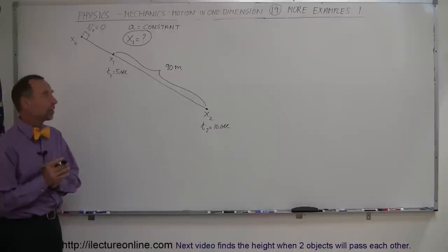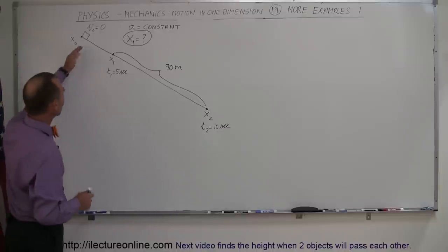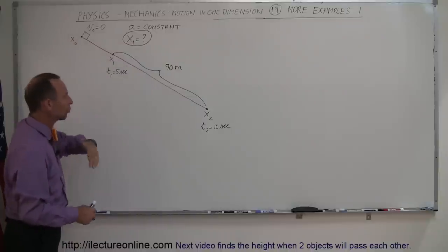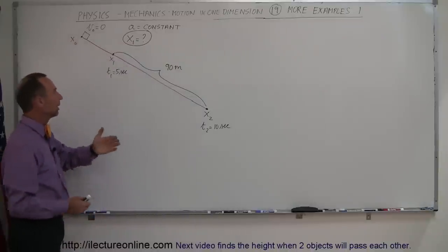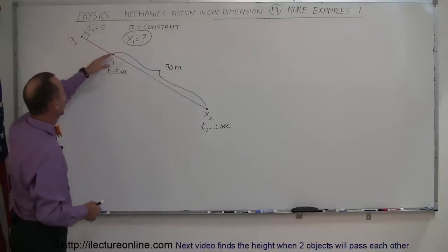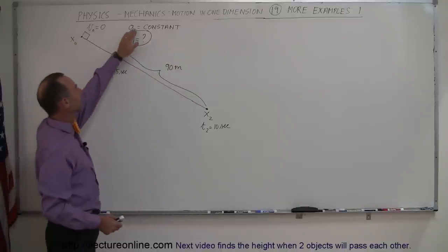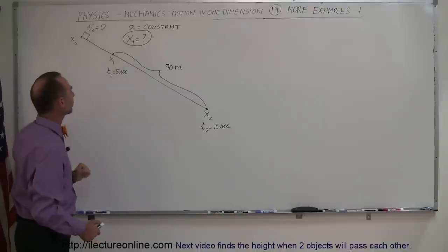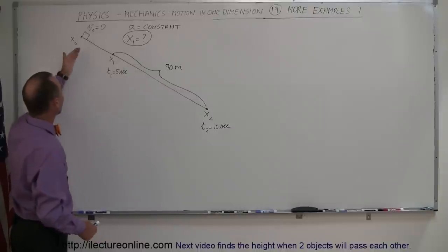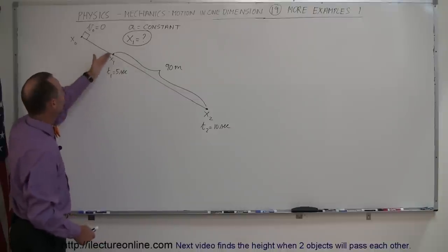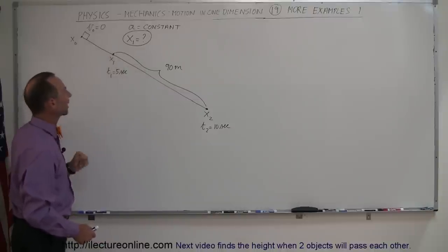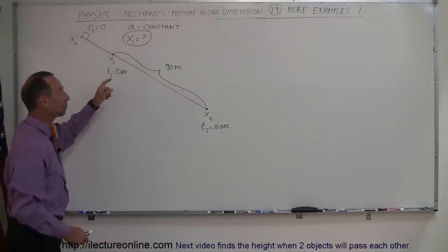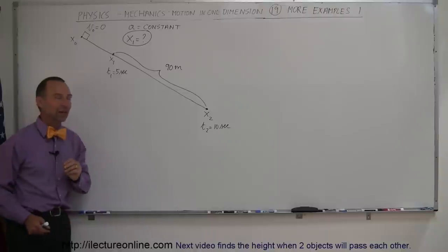What we have in front of us here is an object sliding down an incline. Let's say there's no friction — it's accelerating at a constant acceleration, starts at initial velocity equal to zero, and reaches a certain point, let's call that x1, and it reaches that point after five seconds.